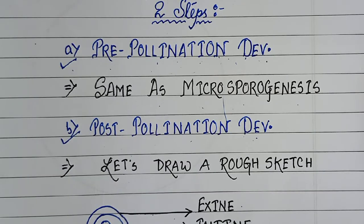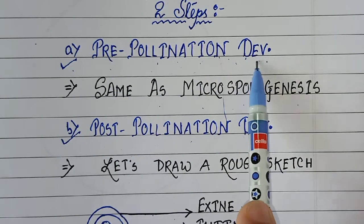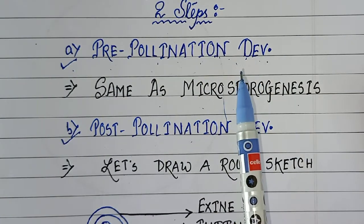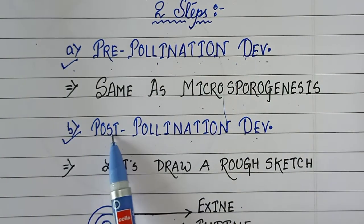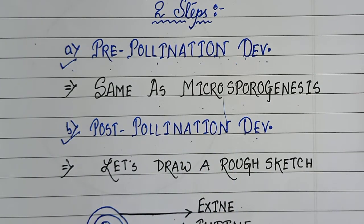There are two basic steps involved in micro gametogenesis: pre-pollination development, which refers to the steps involved before pollination, and post-pollination development, the steps that are involved after pollination.